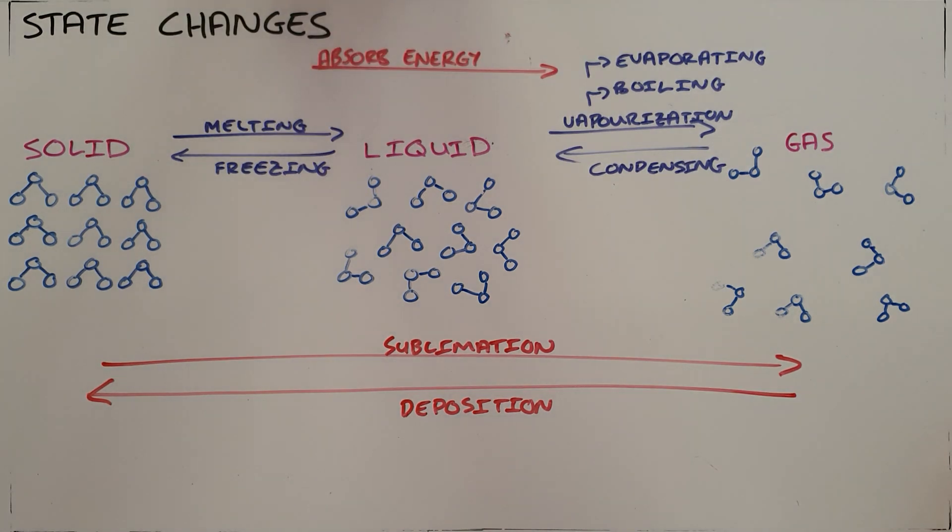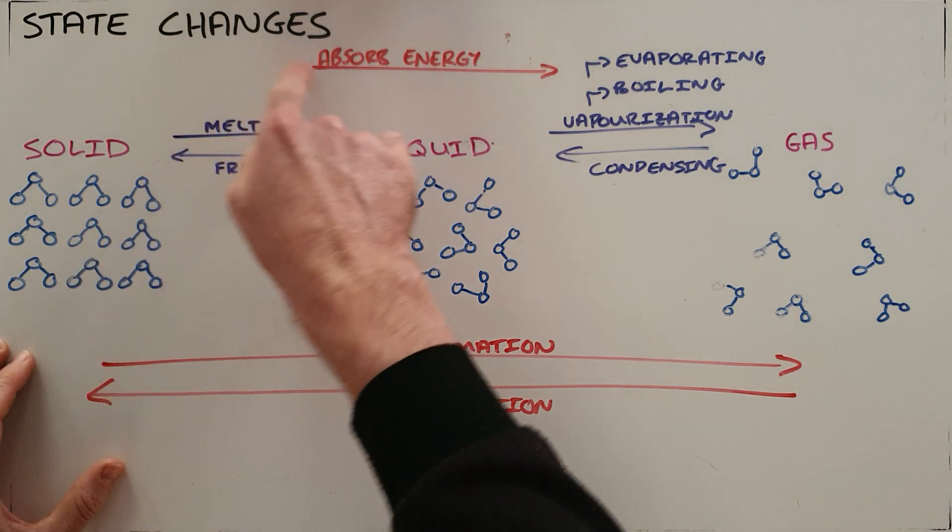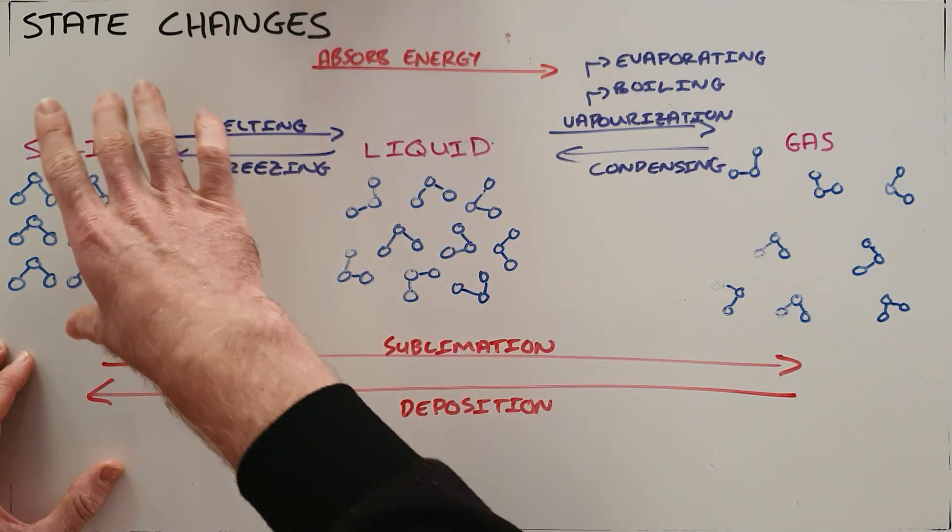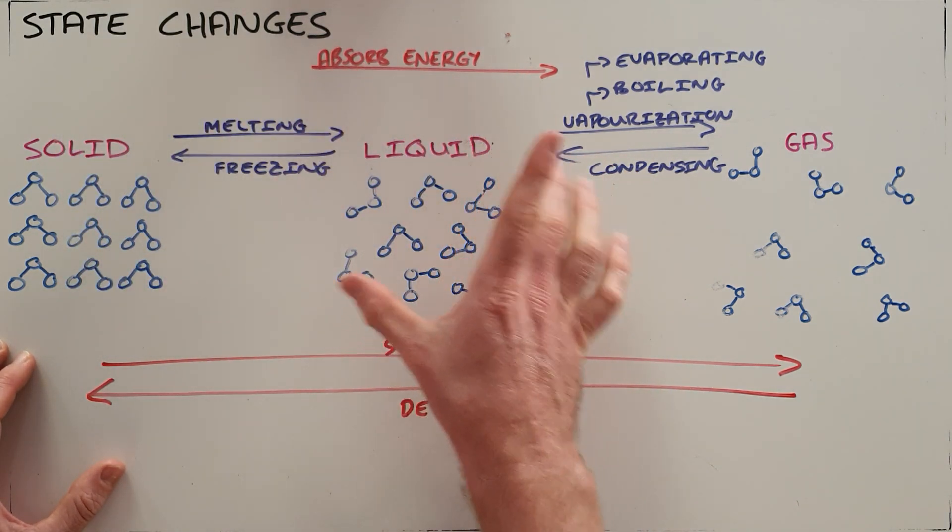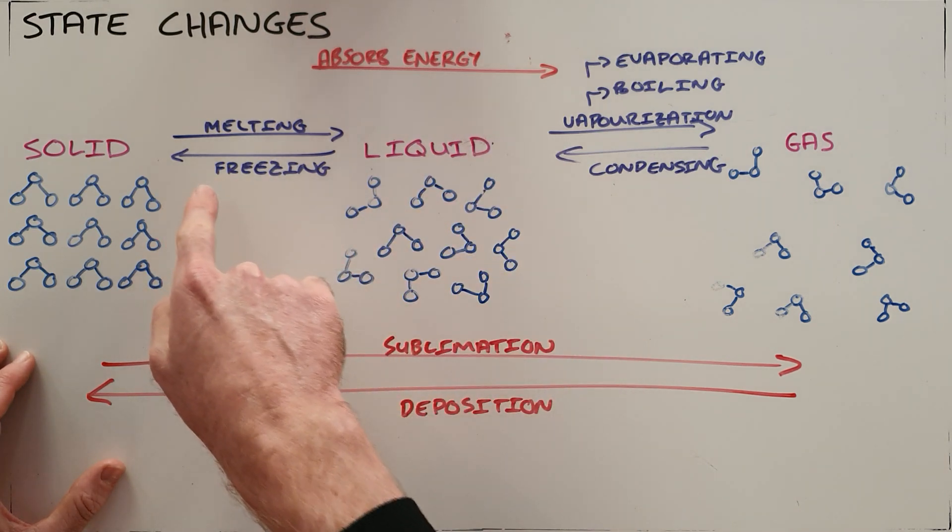So once again, we know that in its lowest form of energy, a substance would start out as a solid. And then as it absorbs energy, the phase would slowly change to the particles becoming more spread out and moving faster as it undergoes melting.